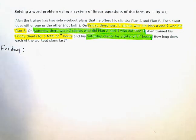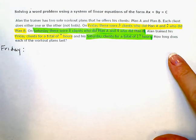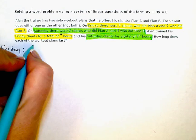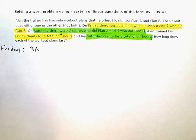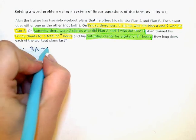So there were three clients who did Plan A. So I had three Plan As, two who did Plan B, plus two Plan Bs, and total that took seven hours.